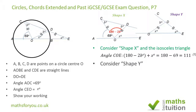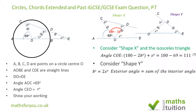For Shape Y, the exterior angle b equals the sum of the two interior angles, which are x and x, so b equals 2x. This follows from the exterior angle theorem: the exterior angle equals the sum of the non-adjacent interior angles.